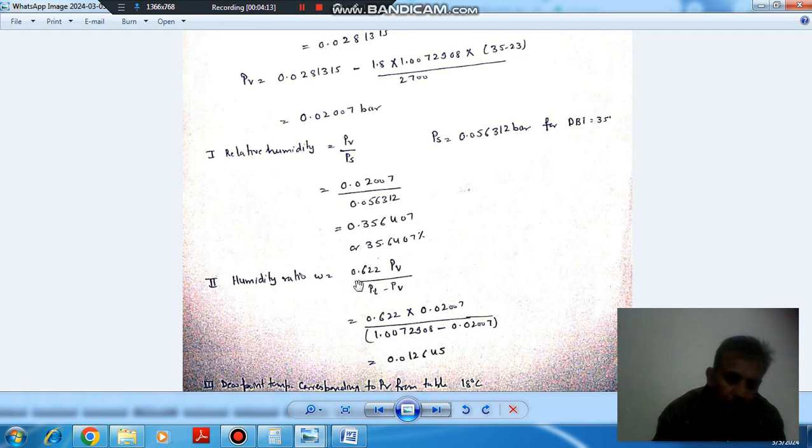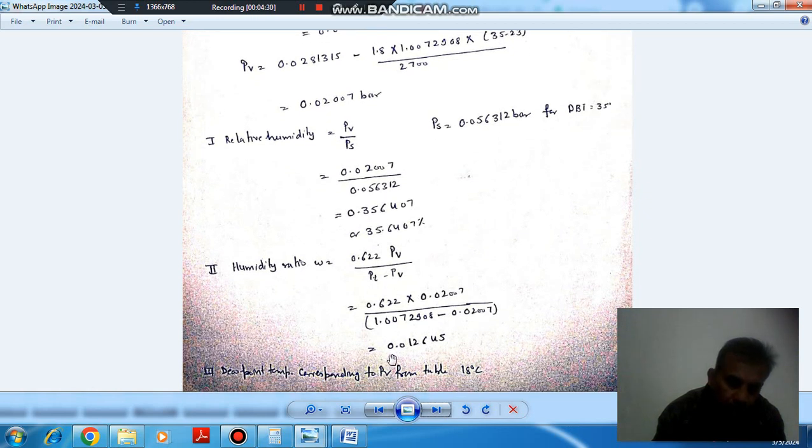Humidity ratio, omega equals 0.622 P_V divided by P_T minus P_V. P_T is 1.00729 bar and P_V is 0.027. It comes out as 0.01645 kg per kg dry air.